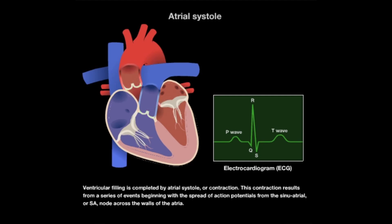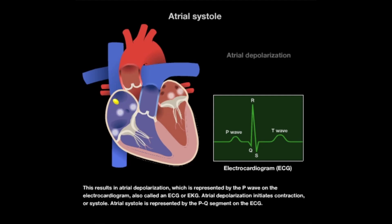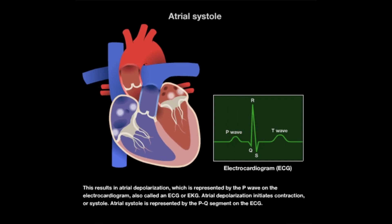Ventricular filling is completed by atrial systole, or contraction. This contraction results from a series of events beginning with the spread of action potentials from the sinoatrial, or SA node, across the walls of the atria. This results in atrial depolarization, which is represented by the P wave on the electrocardiogram, also called an ECG or EKG. Atrial depolarization initiates contraction, or systole, and atrial systole is represented by the PQ segment on the ECG.